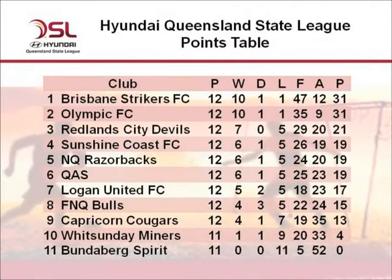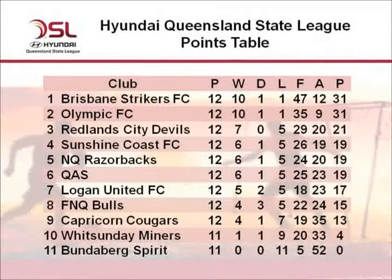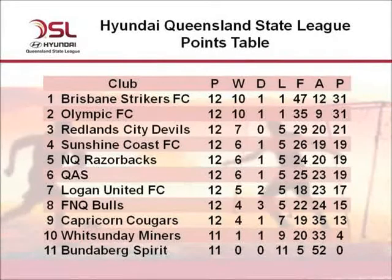At the conclusion of Round 13, Brisbane Strikers and Olympic FC extend their lead over the chasing clubs to 10 points. Strikers are just ahead due to superior goal difference — an impressive 47 goals scored — whilst equally impressive is the nine goals only conceded by Olympic. Redland City Devils move into third place, while Sunshine Coast are fourth with their season on track. Losses for NQ Razorbacks and QAS see them both drop out of the top four on goal difference, with Logan just two points behind — only four points separating those five teams.